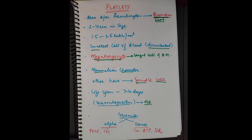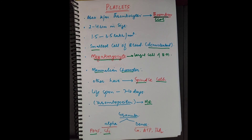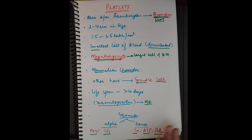Inside a platelet there are granules. There are two types: alpha granules and dense granules. Alpha granules contain platelet-derived growth factor and clotting factors. Dense granules contain calcium, ATP, and thromboxane A2. Remember that platelets contain these two types of granules: alpha granules and dense granules.